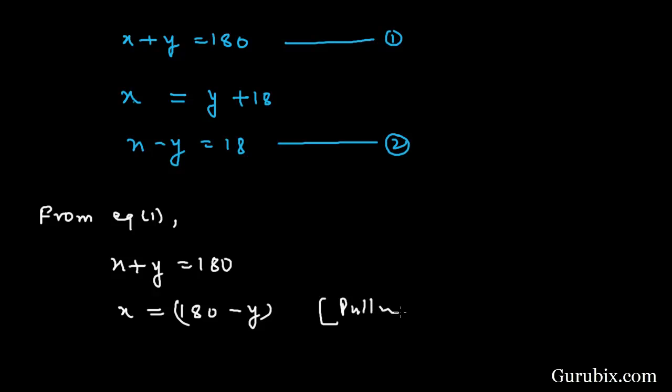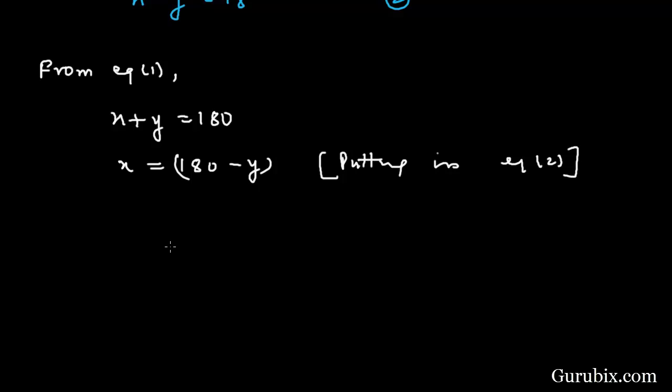Now we shall put this value in equation number two. Equation number two is X minus Y, and the value of X is 180 minus Y minus Y equals 18. This means minus 2Y equals 18 minus 180 degrees.